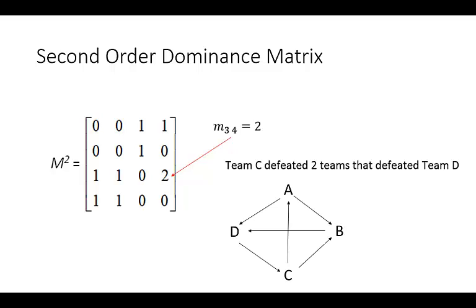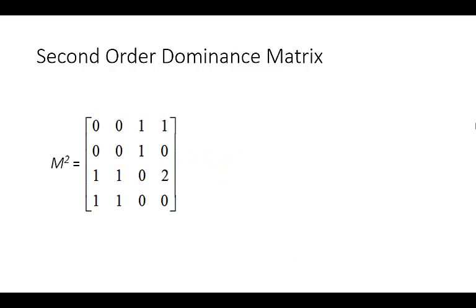Let's have a look back at our original diagram. So team C defeated A and B, and both of those teams defeated team D. So that's what that 2 represents. Let's have a look at another element in this matrix.